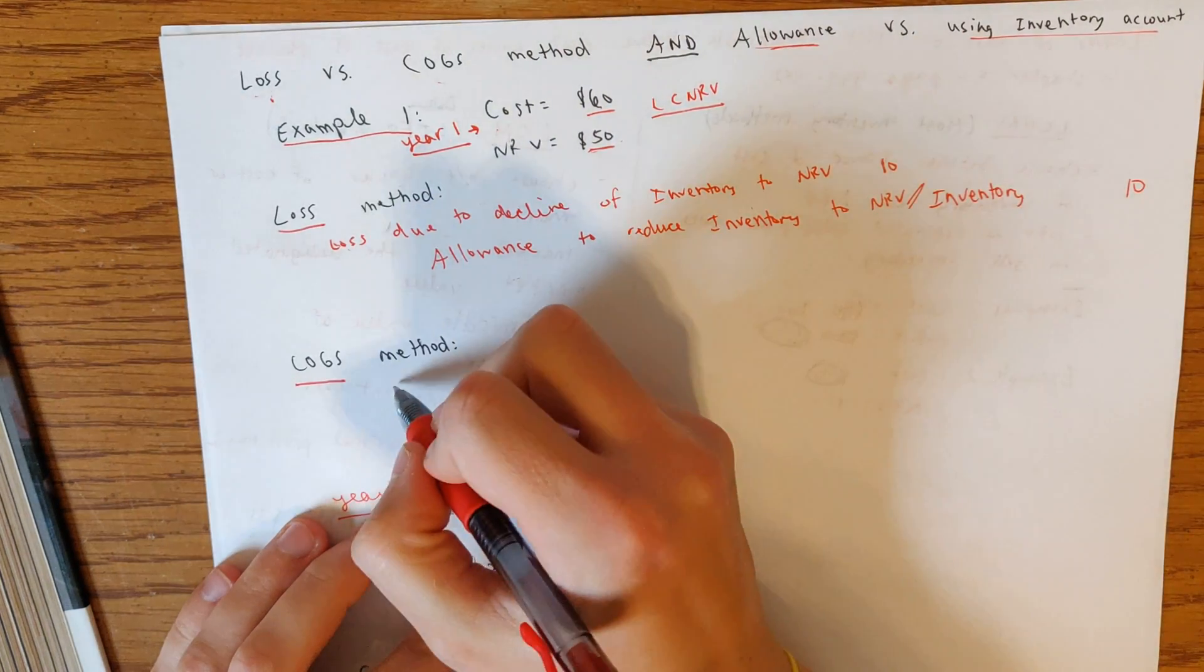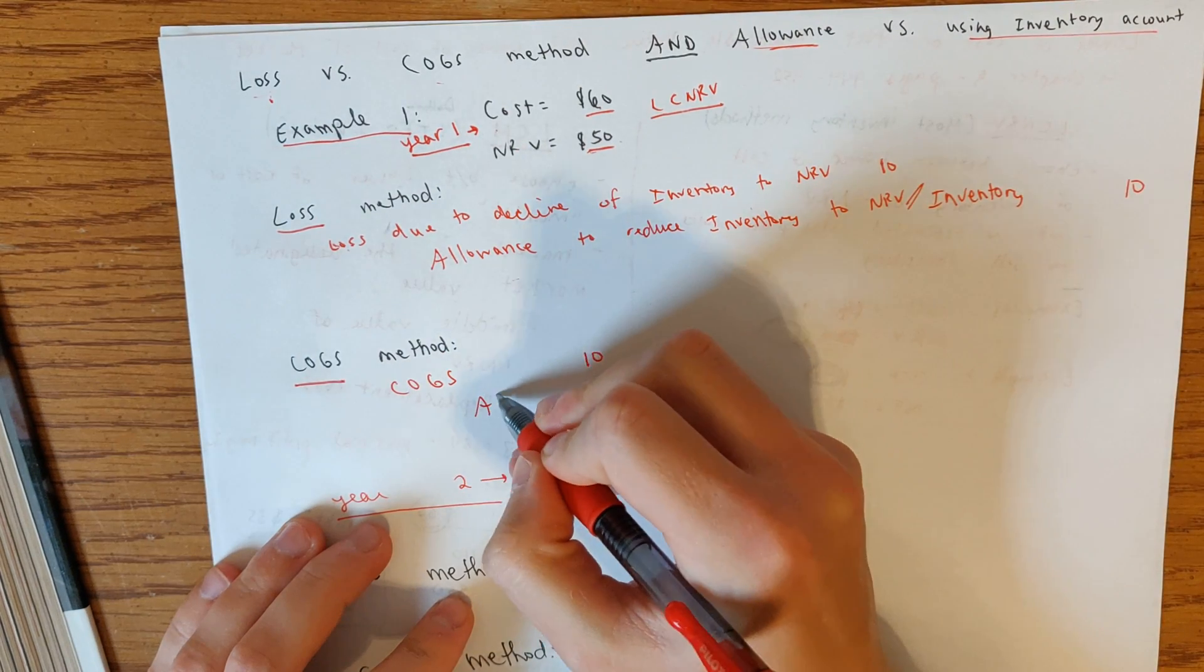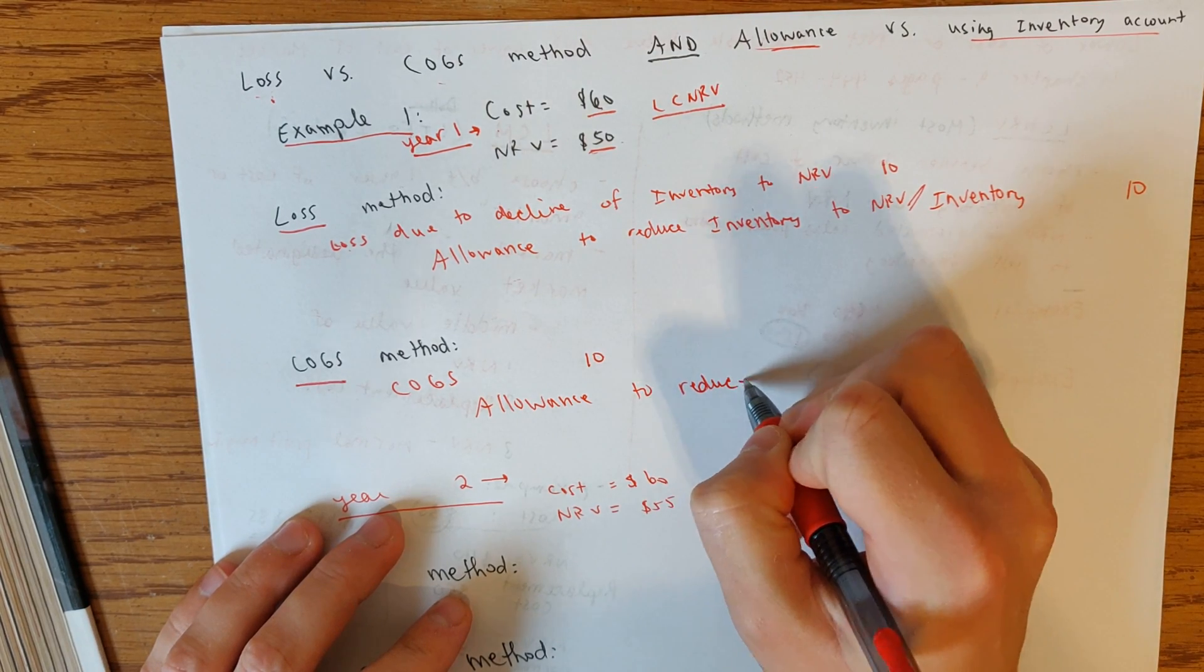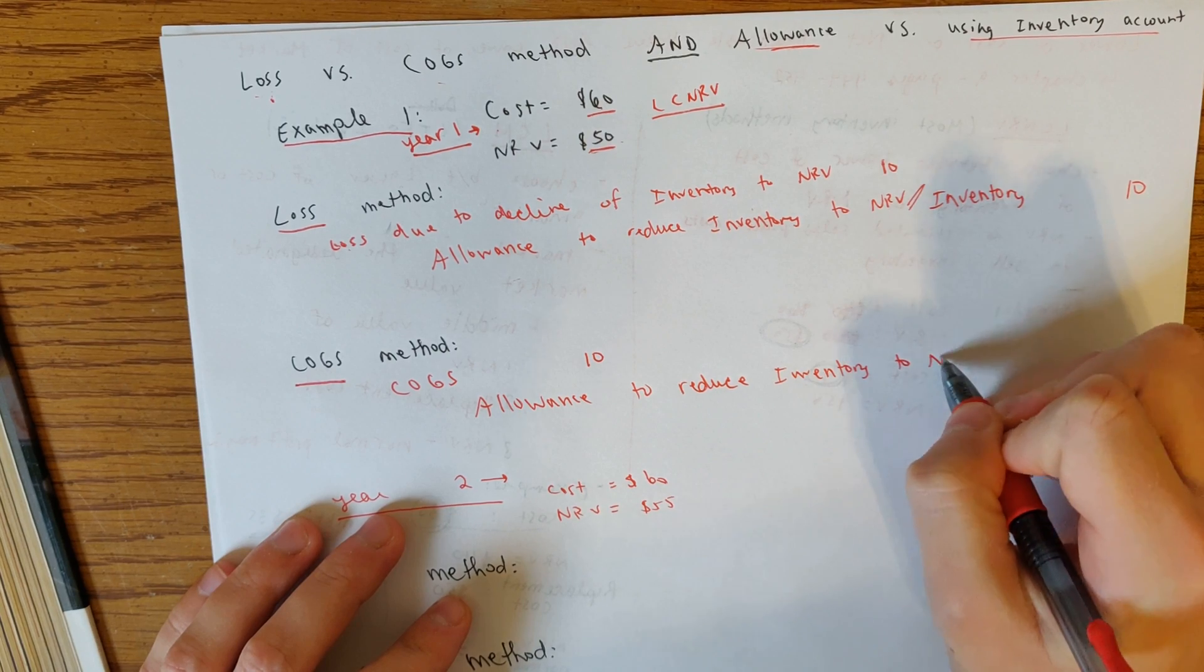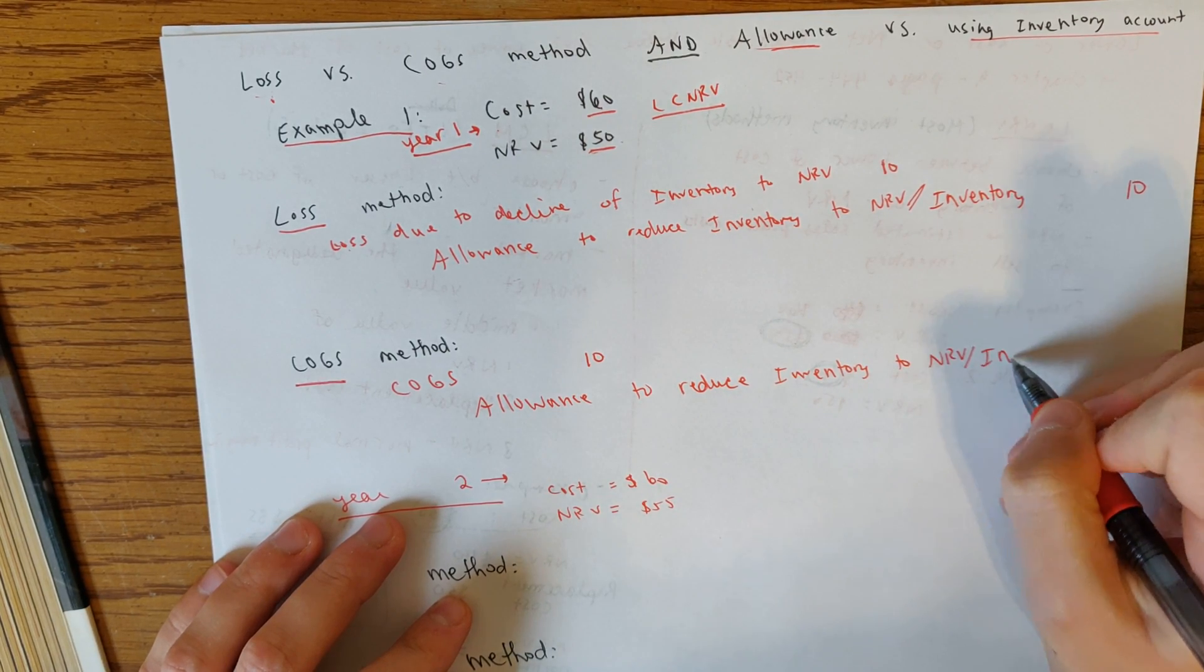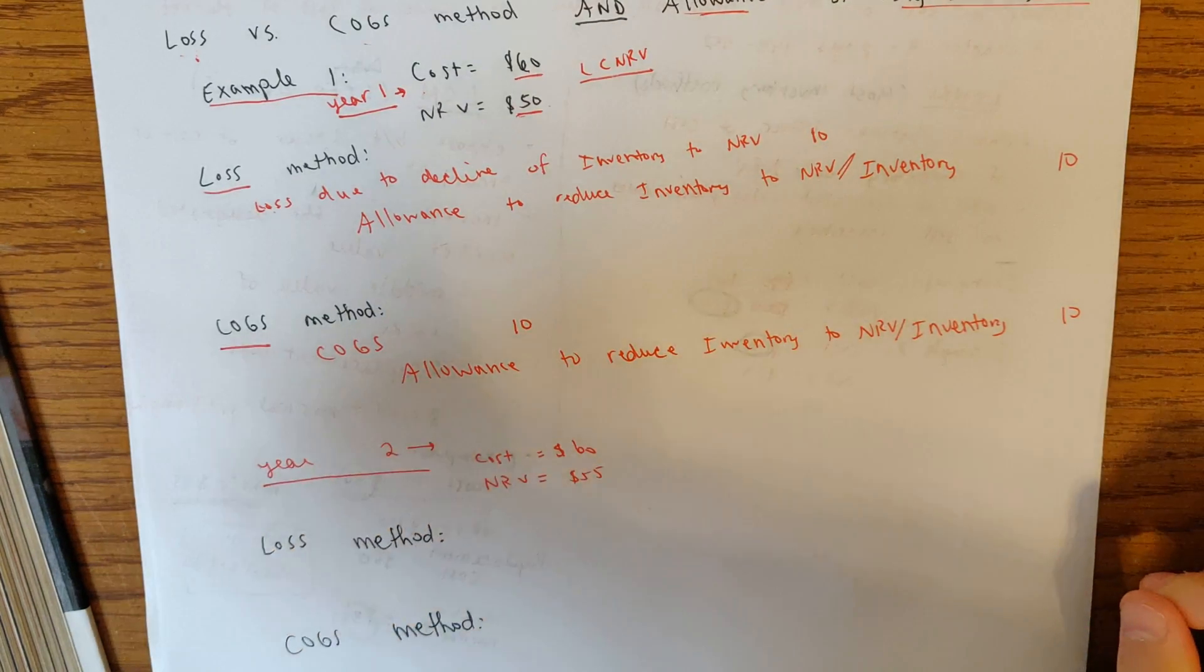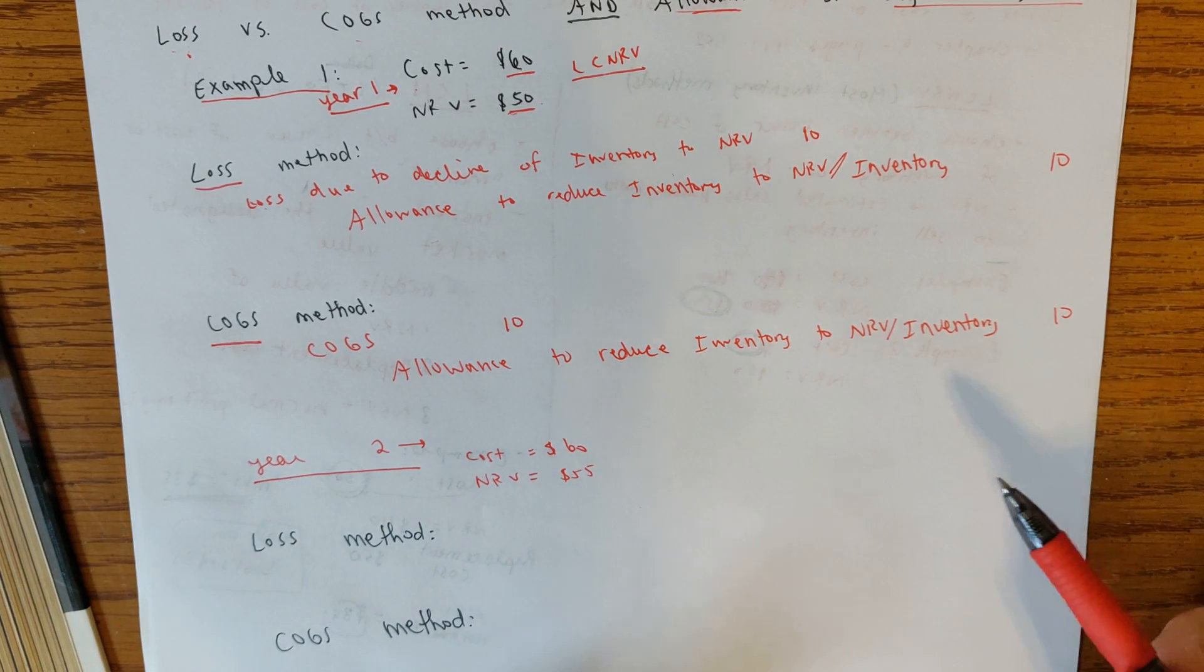Then if they say to use the cost of goods sold method, you would do cost of goods sold as the debit for 10 and then the credit, it just depends. If they say use the allowance, allowance to reduce inventory to NRV, or if they say to use inventory, it will specify. But you just need to make sure that you're using the one that is specified in the problem.